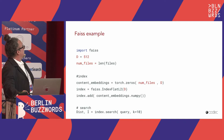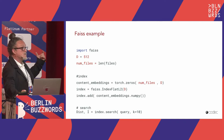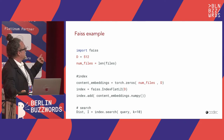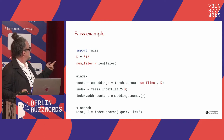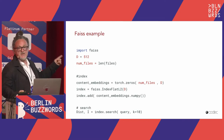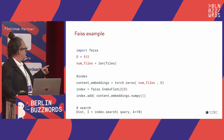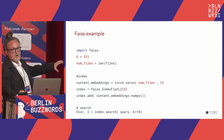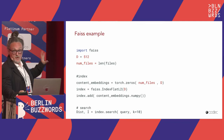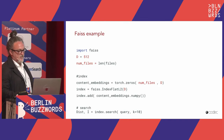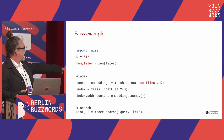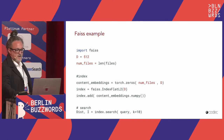A simple FAISS example: it comes with a Python package you can pip install. Assuming your documents are already converted to vectors, you create an index — in this case a flat index with L2 / Euclidean distance — add all your vectors, and then repeat the same for search. You get back distances and indices for the top-k, like the top 10 documents.